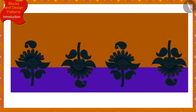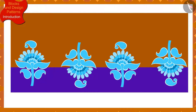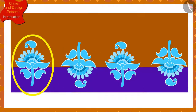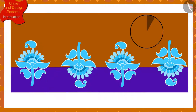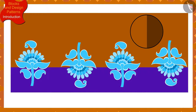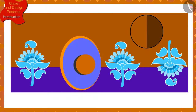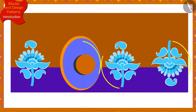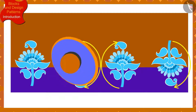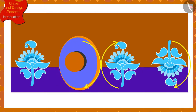If we look closely, we will find that this impression has been made by rotating the previous impression by half in the clockwise direction. In order to create this pattern, Banno has rotated the block of the design by half in the clockwise direction each time.